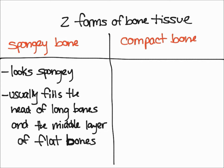You can also find spongy bone in the middle layer of flat bones, such as your sternum or your cranium for example. An important thing to remember is that spongy bone is always covered by compact bone, meaning spongy bone is never just exposed.